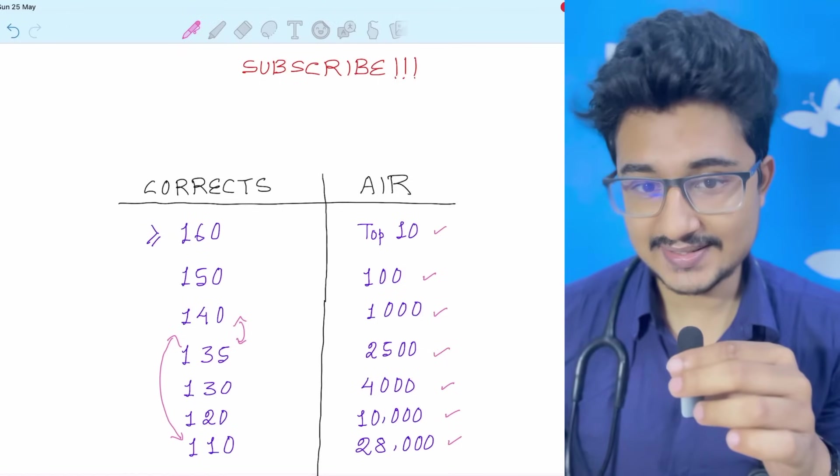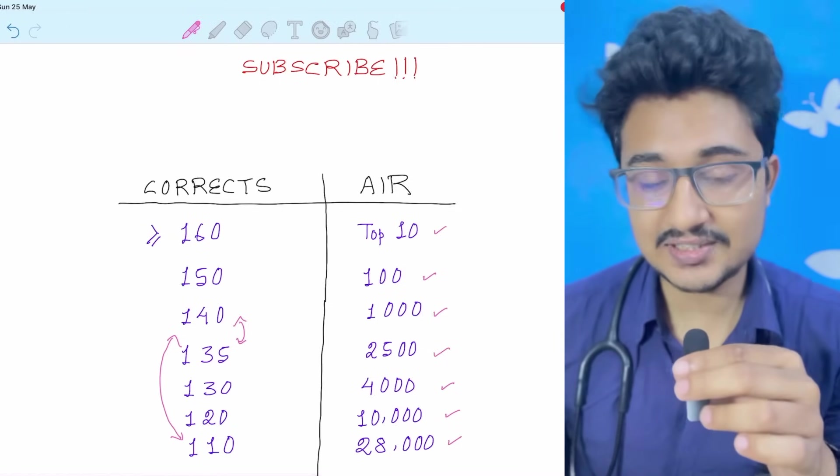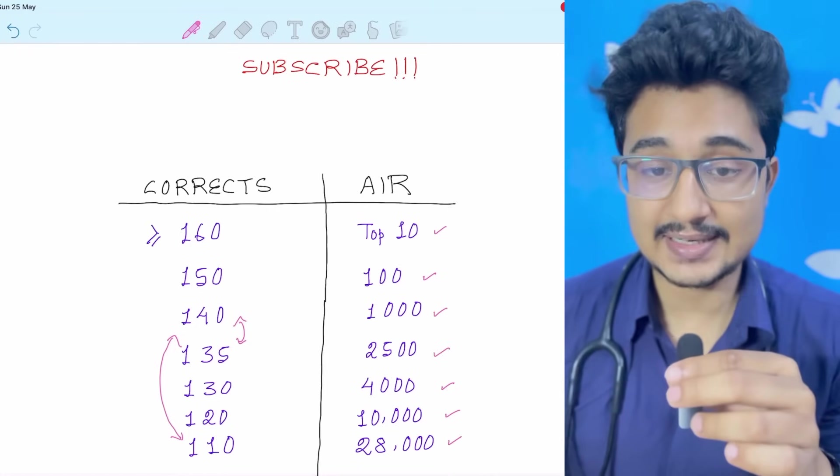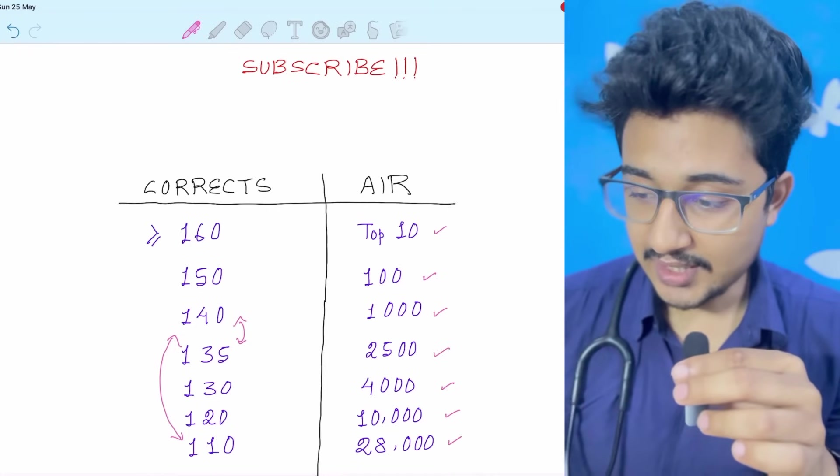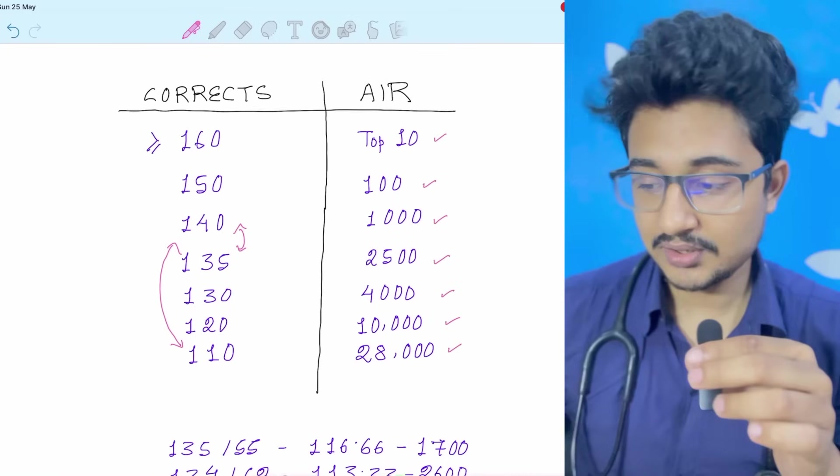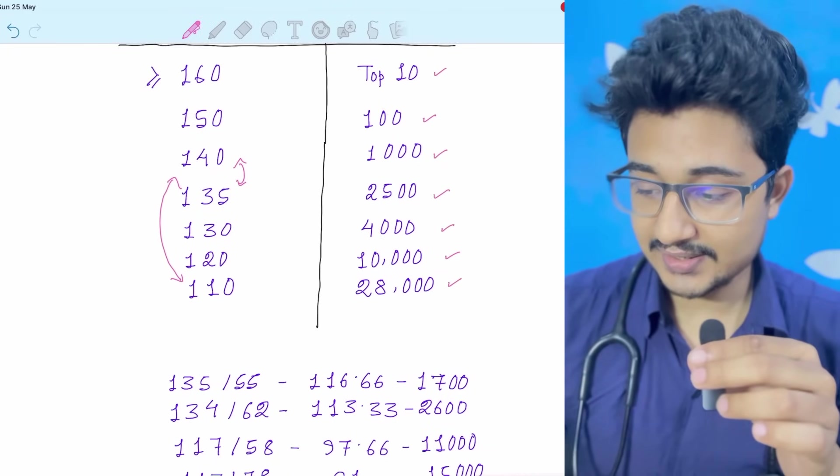That means ortho, anesthesia, like this, any kind of clinical stream they can get. But with 2500, a UR candidate can't get a clinical stream. Now in comment section, many of you will reply that this is false data and all. For that I give you another example.